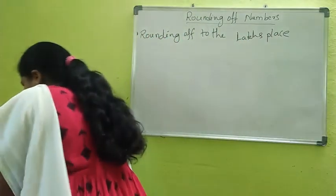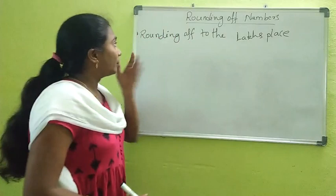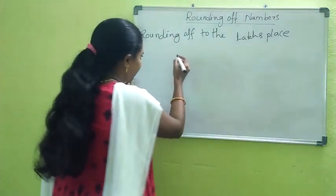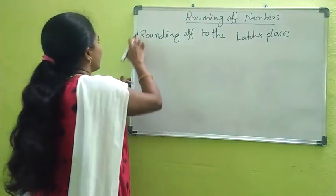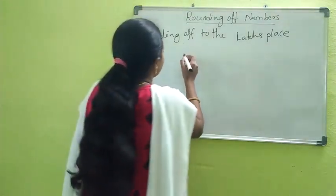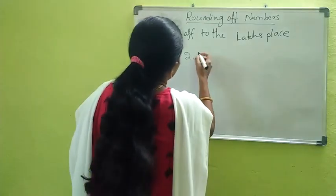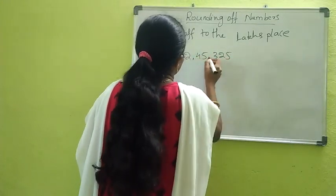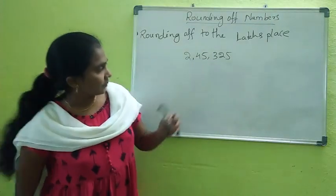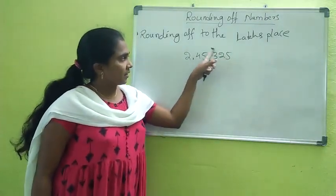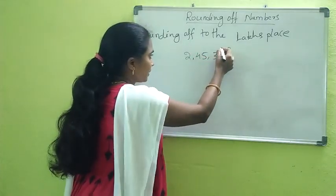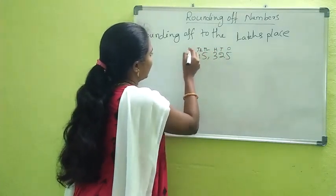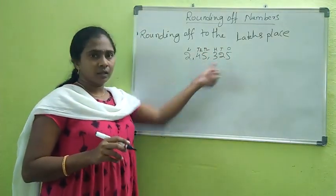Now we will learn the method. I will take a number which contains the lakhs place — at least minimum six digits. Read the number: we have the ones place, tens, hundreds, thousands, ten thousands, and lakhs. For example: two lakhs, forty-five thousand, three hundred and twenty-five.